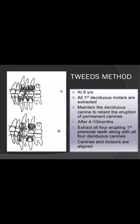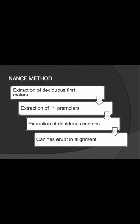Tweed's method is also commenced at around 8 years of age. Here, all four first deciduous molars are extracted first, while the deciduous canines are allowed to remain in position to delay eruption of the permanent canines. After 4 to 10 months, all four erupting first premolars are extracted along with all four deciduous canines, after which the canines and incisors are properly aligned in their spaces. Nance's method is very similar — extraction of deciduous first molars followed by extraction of first premolars and deciduous canines, allowing canines to erupt in alignment.